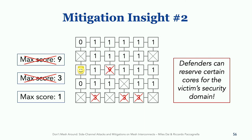This means that defenders can reserve certain cores for the victim's security domain to reduce the efficacy of the attack. Going forward, we could even envision better mitigations by combining these with slice partitioning — as we saw in a previous talk, many solutions exist to provide cache partitioning. However, that would require extra hardware support that is not yet available.